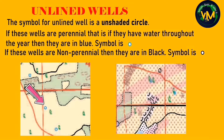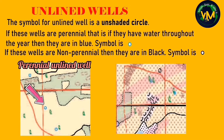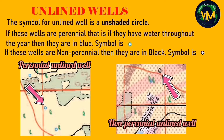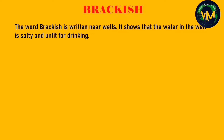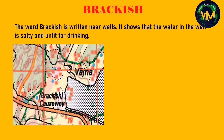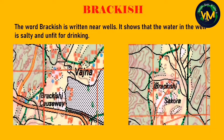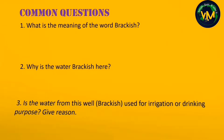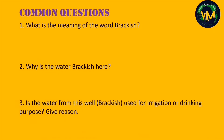In the first picture you can see a perennial unlined well, whereas in the second picture you can see the non-perennial unlined well. In some parts of the map near the wells, you can see the word 'brackish'. It shows that the water in the well is salty and unfit for drinking. Here are some common questions.